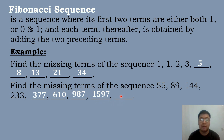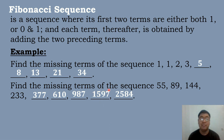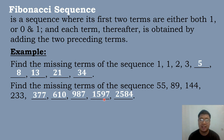To get the value of the next term, you will add 1,597 plus 987, which is equal to 2,584. So the missing terms of the Fibonacci sequence 55, 89, 144, 233 are 377, 610, 987, 1,597, and 2,584.